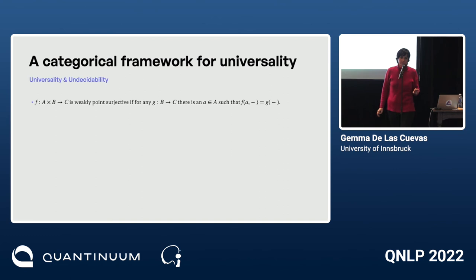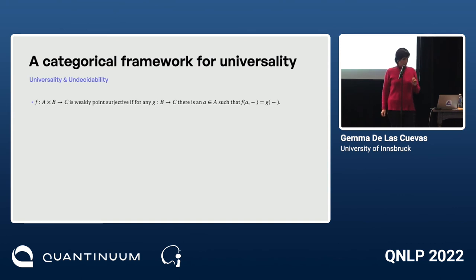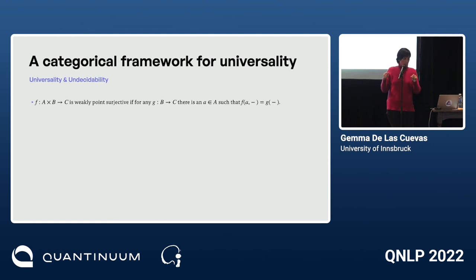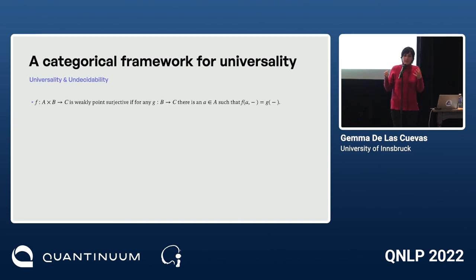A function F from A×B to C is weakly point surjective if for any G from B to C, there exists an A such that F(A,−) equals G. In other words, F can represent G by choosing an element in the extra part of its domain — and F is weakly point surjective if it can represent every G.